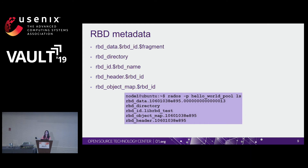When you create an RBD image, it creates a bunch of objects. Issuing a RADOS command on the RBD pool shows these objects. RBD data holds the raw image data; RBD ID is the unique ID per image, and the fragment is based on the offset of the image. RBD directory holds information of all images within the pool, and the ID is locatable using the name and vice versa. RBD header holds per-image metadata, and RBD object map holds knowledge of where data resides in the cluster.